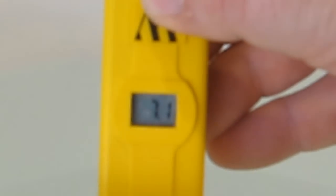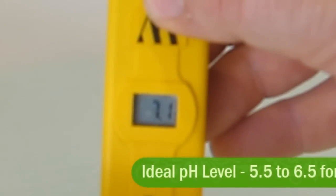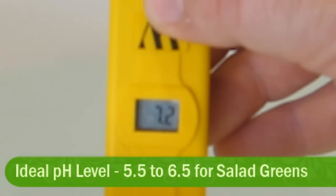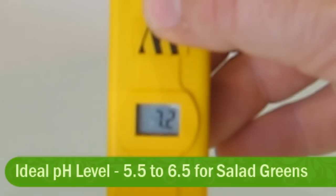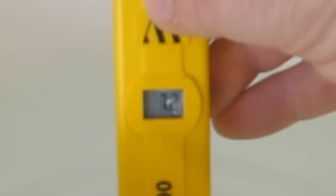As you can see, the pH of the water here right now is 7.1. Now the ideal level we are looking for is 5.5 to 6.5. If it's in that range, it's great for growing salad greens. We've talked about nutrient lockout in the presentation, and you can review the information on the DVD to get more information about what nutrient lockout is.